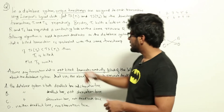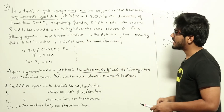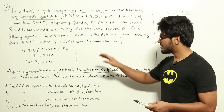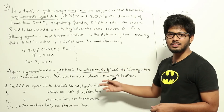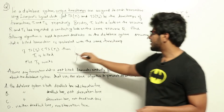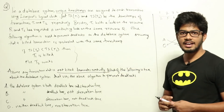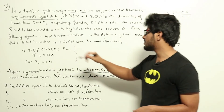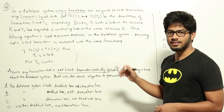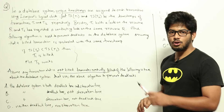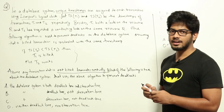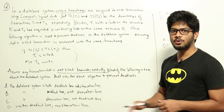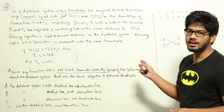The transaction with the smaller timestamp has higher priority. If a transaction with a smaller timestamp requests a lock held by a transaction with a higher timestamp, the lock holder gets killed. Otherwise, if a transaction requests a lock held by a transaction with a lower timestamp (higher priority), the requesting transaction has to wait — the higher-priority one won't be killed.